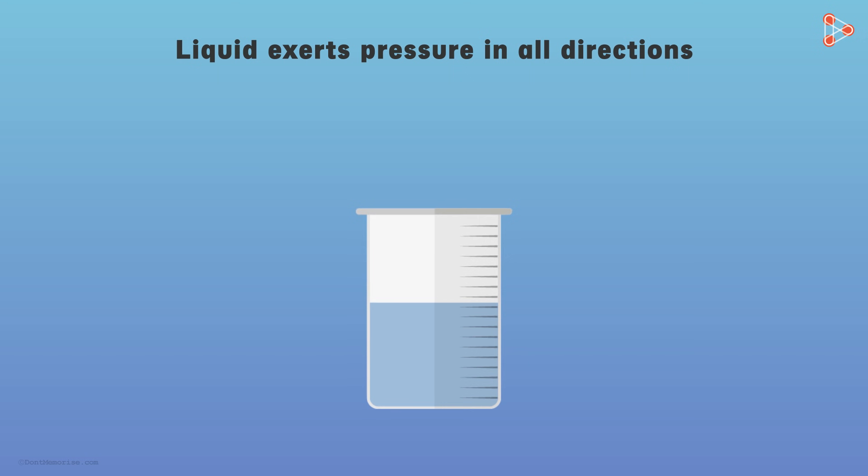In our previous video, we studied that liquid exerts pressure in all directions. For example, here we have water in a beaker. Due to gravity, this water is pulled down towards the earth. If we divide this water into different layers, then each layer is being pulled down by the earth.